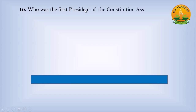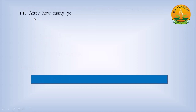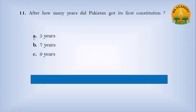Who was the first president of the Constituent Assembly of Pakistan? Option A, Quaid-e-Azam; Option B, Liaquat Ali Khan; Option C, Maulvi Tamizuddin. Answer: A — Quaid-e-Azam. After how many years did Pakistan get its first constitution? Option A, 5 years; Option B, 7 years; Option C, 9 years. Answer: C — 9 years.